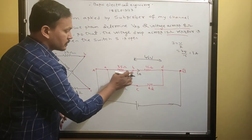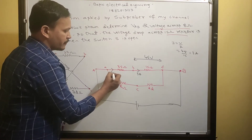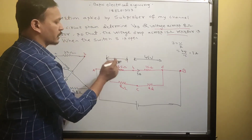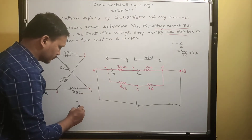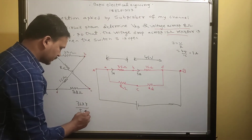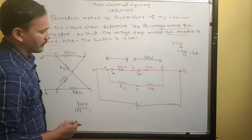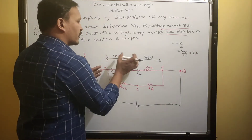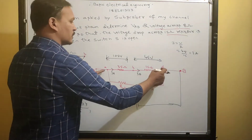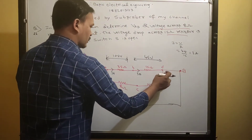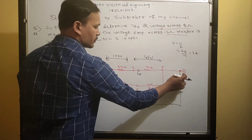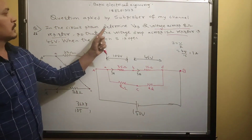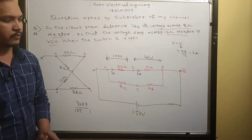The same 3 ampere current flows through the 35 ohm resistance. Voltage across 35 ohm = 3 × 35 = 105 volts. These two resistors are connected in series, so total voltage = 105 + 45 = 150 volts. Since A is connected here and B is connected to B, whatever voltage appears here is the same voltage across A and B. So VAB = 150 volts. The first part is done.